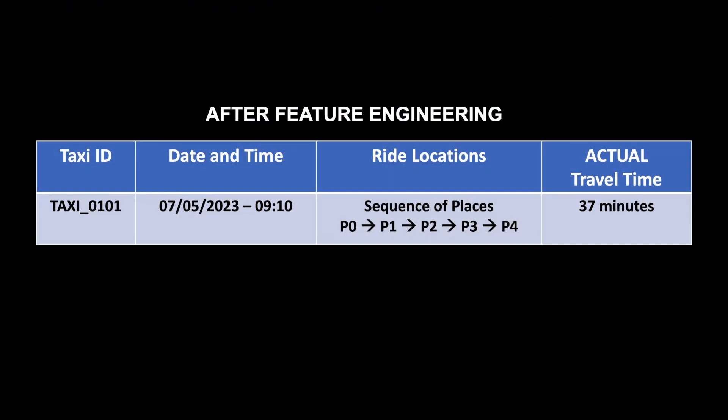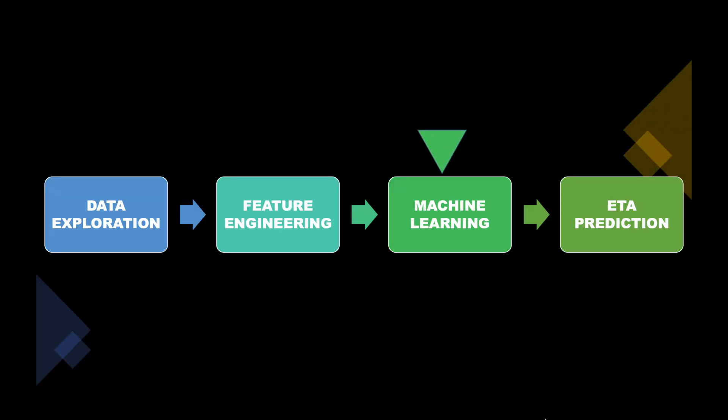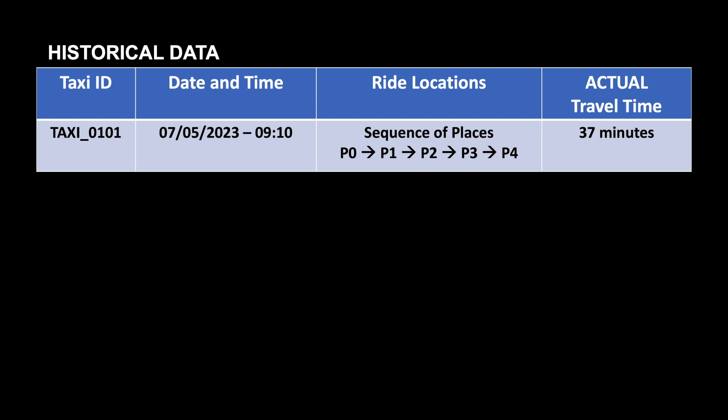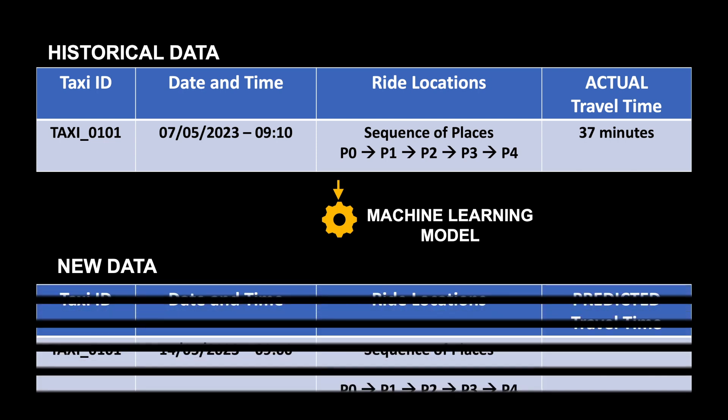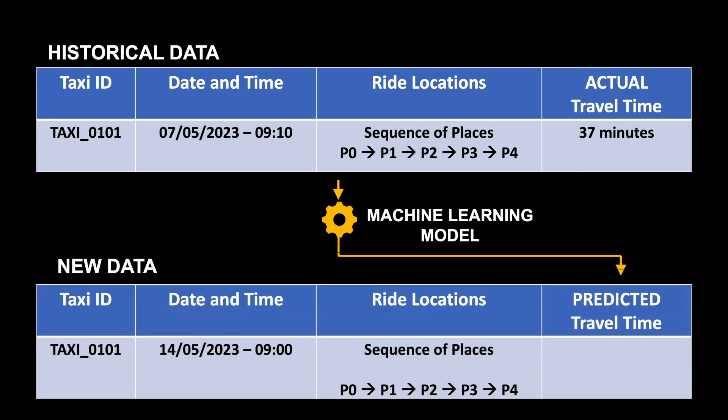After feature engineering, we have a dataset which contains columns such as day, hour, month, start place, stop place, the ride represented as a sequence of places, and the travel time. The next step is to train a machine learning model on historical data, which will learn the relation between the input features and the output — the travel time. The output of the training will be a model that can predict travel time for all new taxi rides.